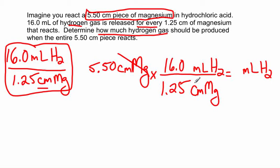Centimeters of magnesium is going to cancel. Milliliters of hydrogen is not going to cancel, which is good, because that's what we want in our final answer.